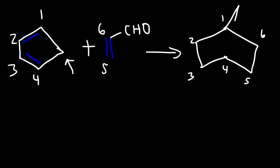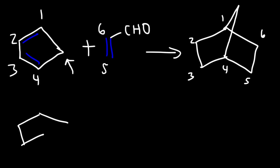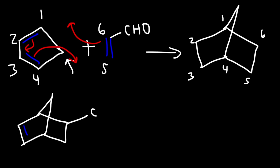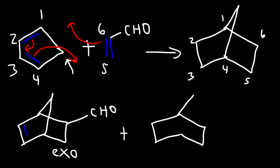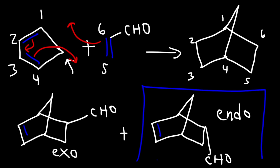In the final product we put the CH2 bridge there, and attached to carbon six we have a CHO group. Don't forget we still need a double bond between carbons two and three. The CHO group can be drawn pointing up — that is the exo product — or pointing down, which is the endo product. The endo product is the major product, so this is the answer.